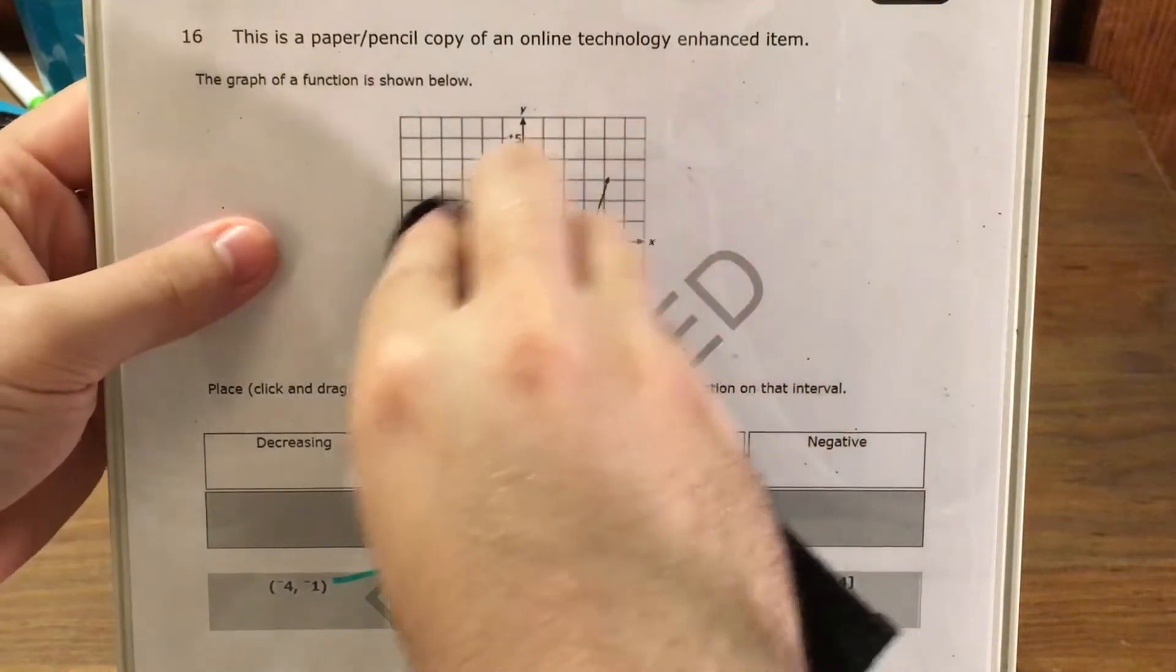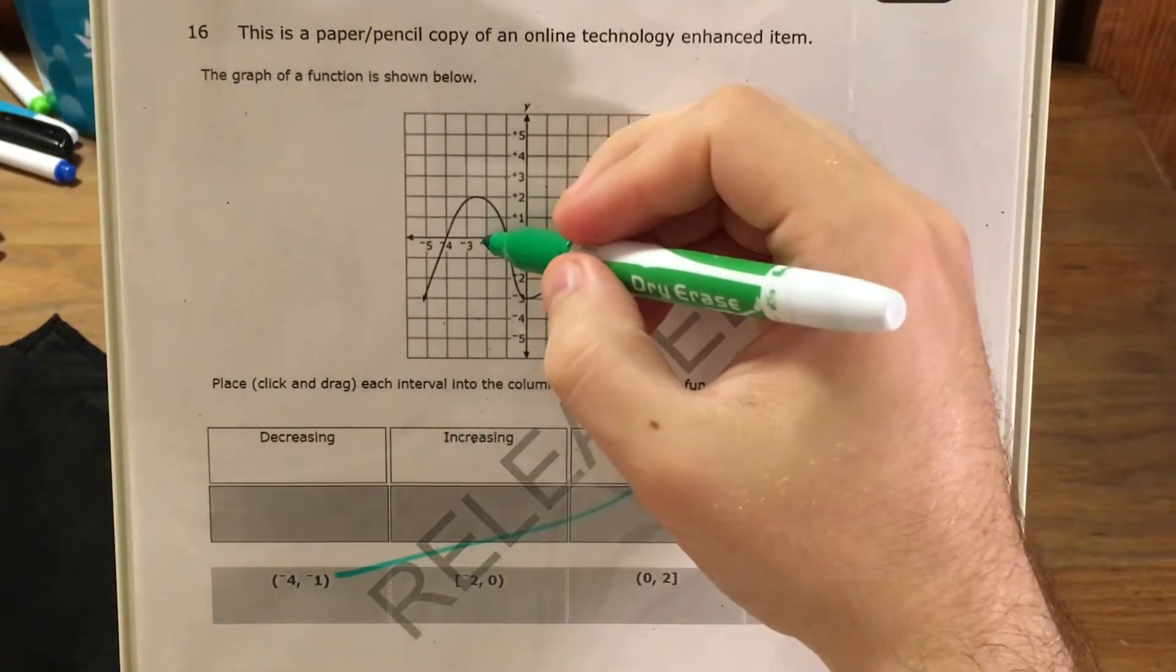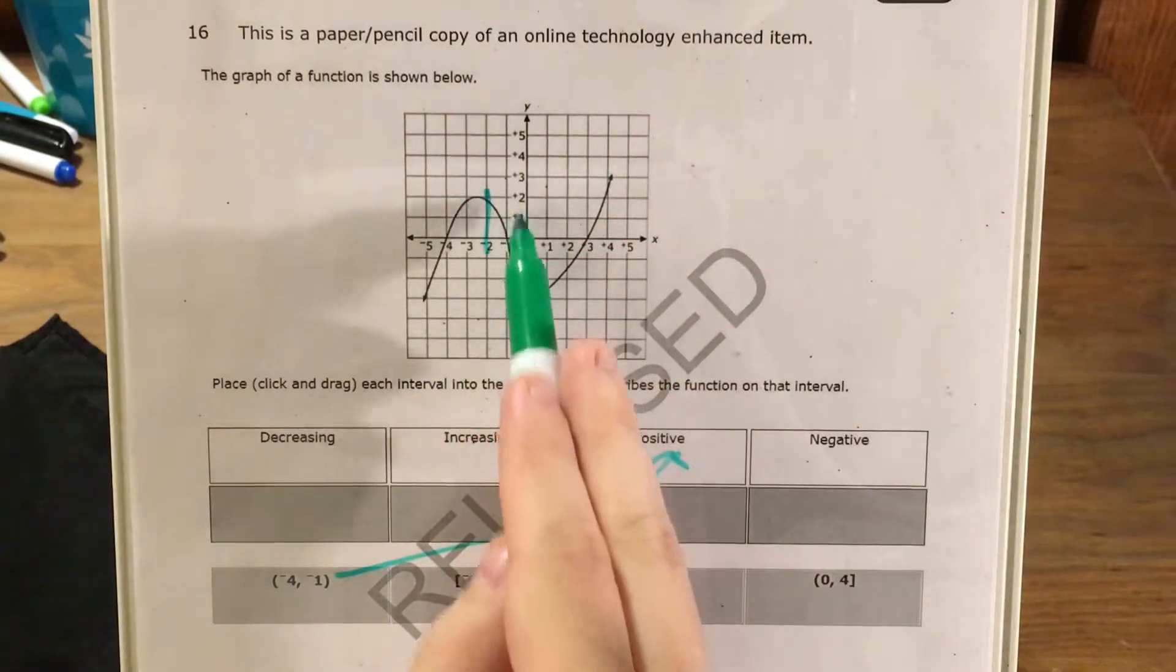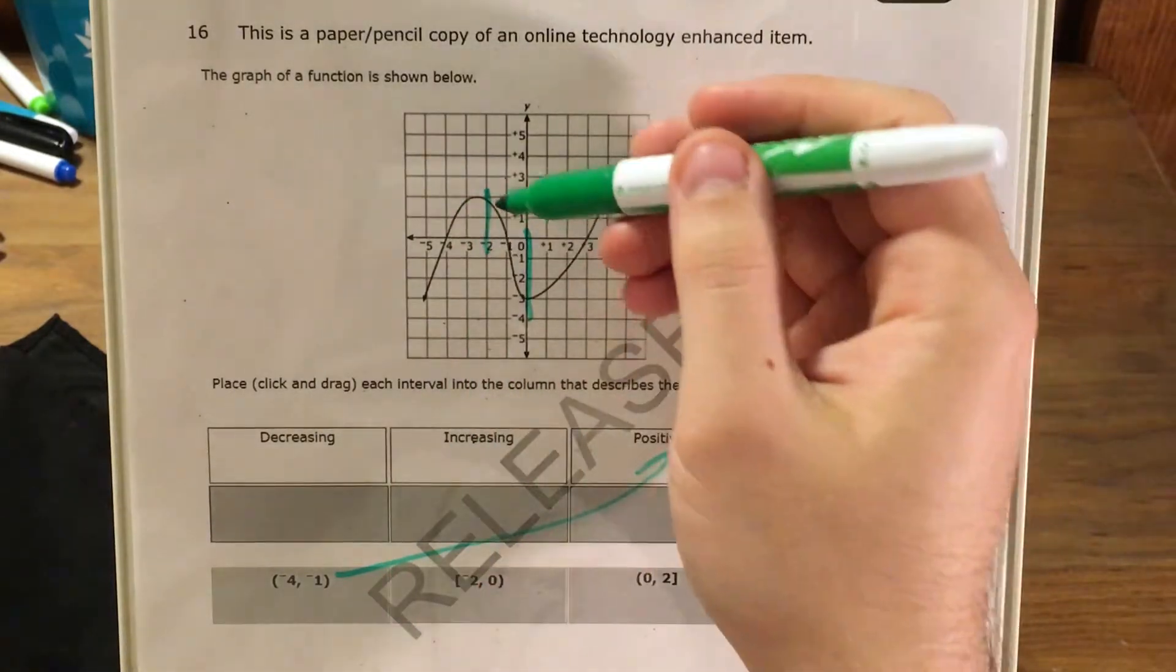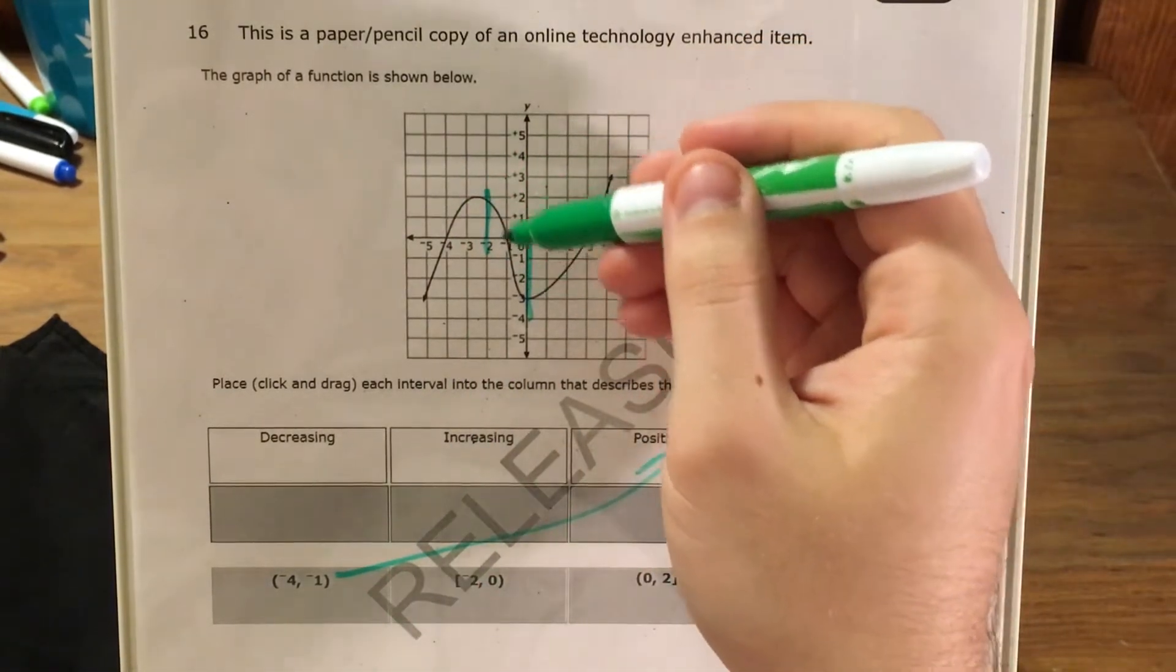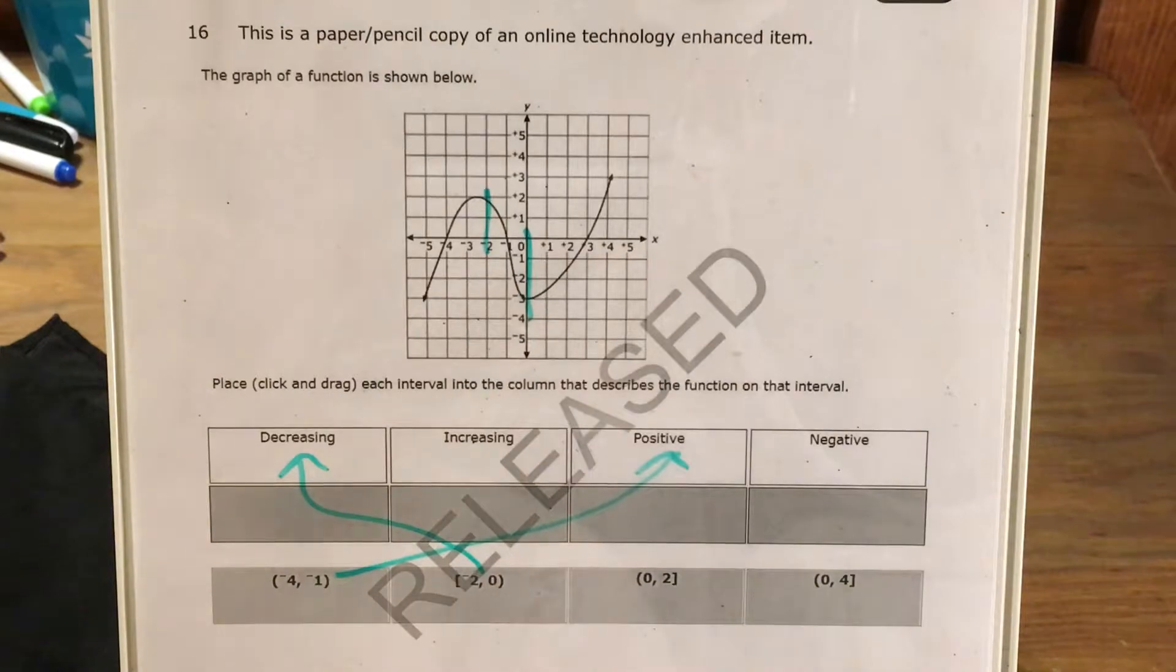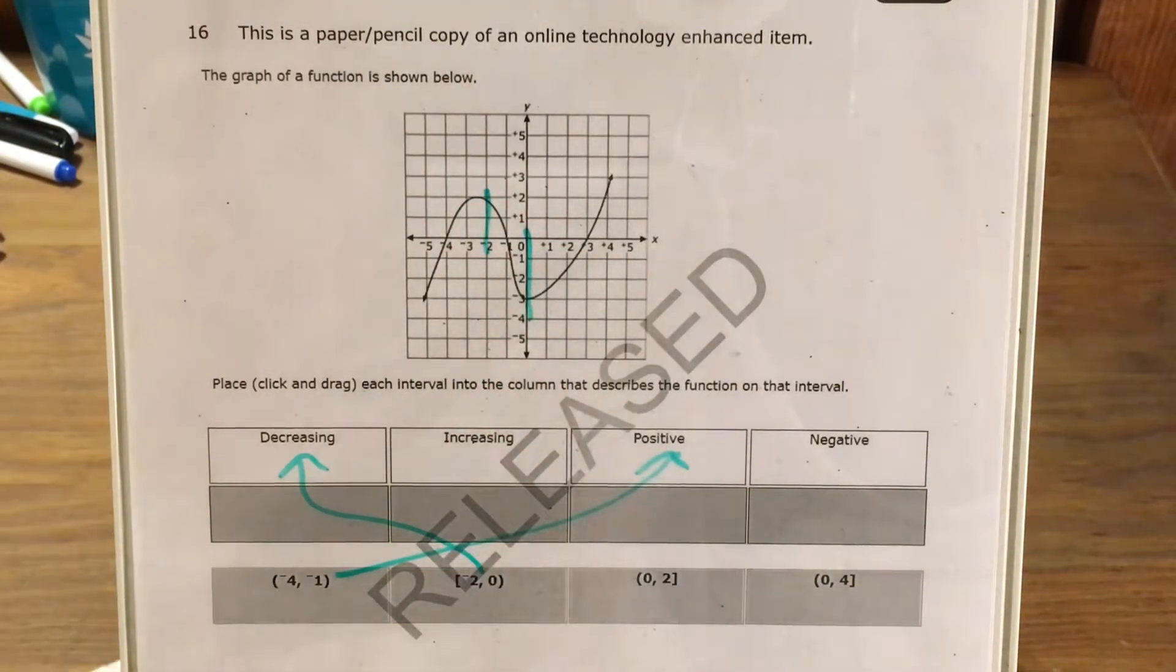Alright, so next we need to look at the interval from negative 2 to 0. Now we can't say it's positive and negative, but it looks like the whole way down, it looks like the drop of a roller coaster. So we would call that decreasing. So the interval negative 2, 0 is one where the function is decreasing because we can see it's always going down within that interval.